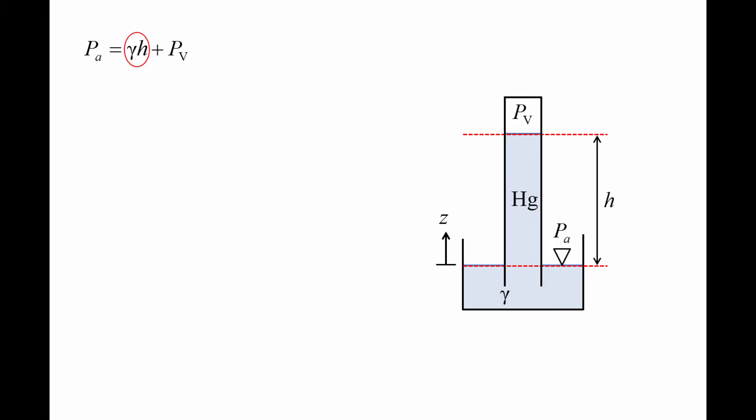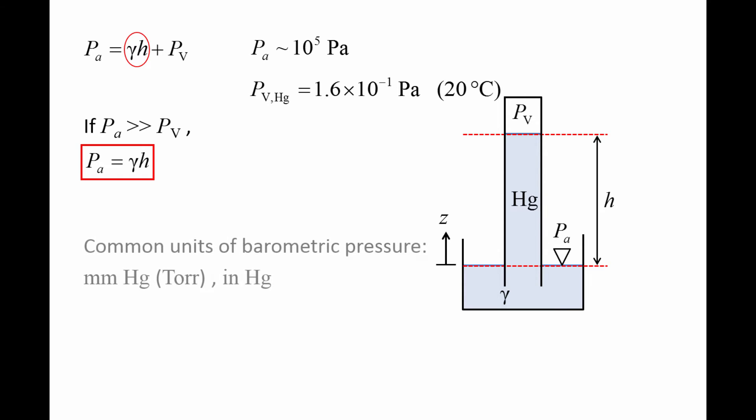Mercury has an additional property that makes it a good choice for use in a barometer. For typical atmospheric conditions, the vapor pressure for mercury is many orders of magnitude smaller than the atmospheric pressure. So we can omit PV from the equation and are left with the atmospheric pressure being approximately equal to the specific weight of the liquid times the column height.